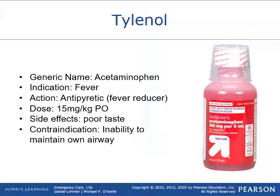Tylenol's generic name is acetaminophen. We give it primarily to pediatric patients who are having a fever — it's an antipyretic, meaning a fever reducer. The dose is 15 mg per kilogram. It comes as 160 mg per 5 mL, so you'll need to measure it in a syringe and give it orally. Squirt it in the side of the cheek rather than the middle so they're less likely to spit it back out. Side effects include poor taste and an uncooperative child. Contraindications are inability to maintain the airway and absence of fever — we only give it as an antipyretic, not as a pain medicine.